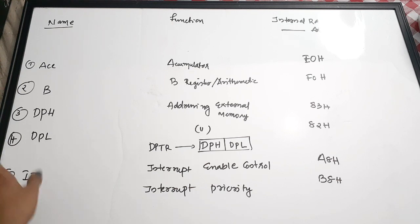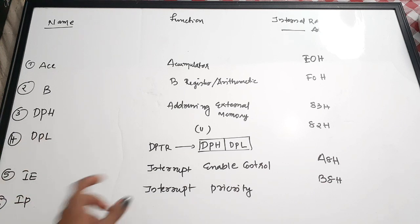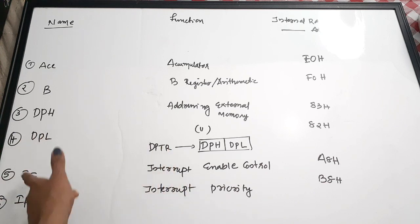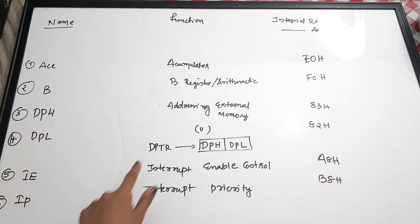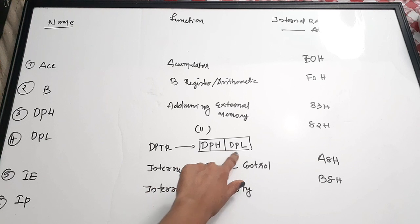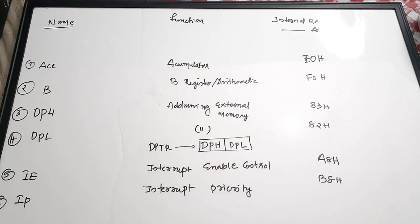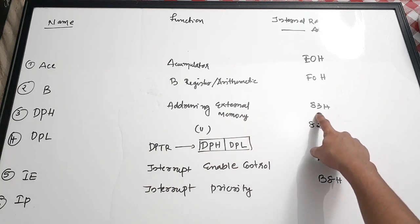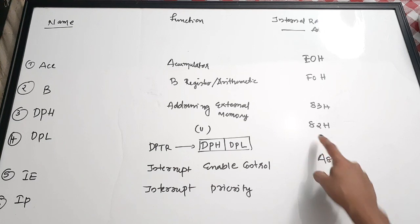DPH and DPL are the high and low bytes of the 16-bit DPTR (Data Pointer) register. DPTR is used for addressing external memory — in programming you may have used MOVX with DPTR for external memory access. The address of DPH is 83H and DPL is 82H.